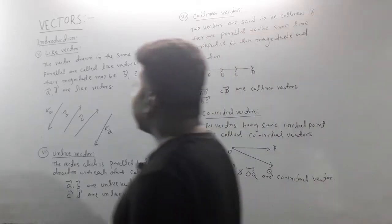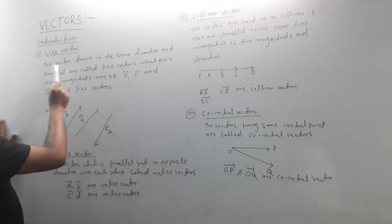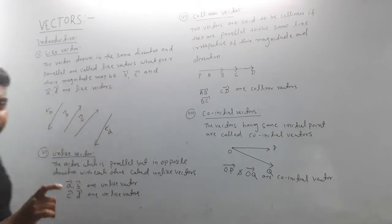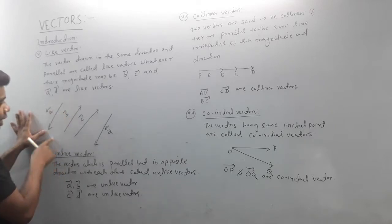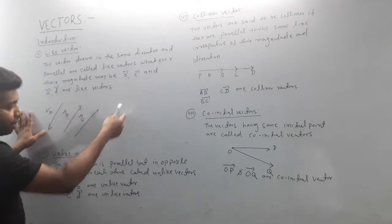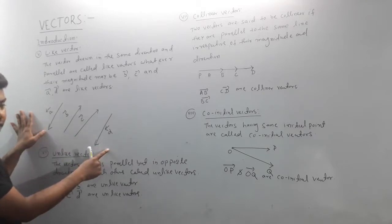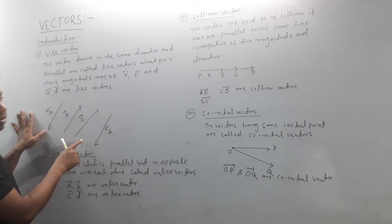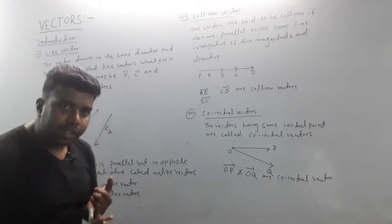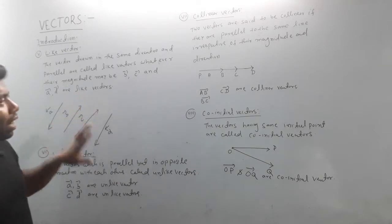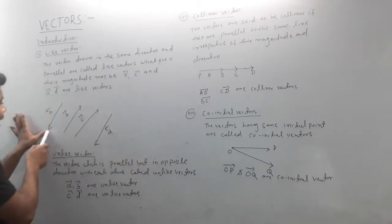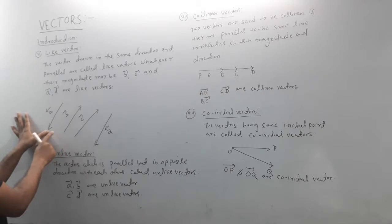Next type is the like vector. Vectors drawn in the same direction and parallel to each other are called like vectors. Unlike vectors, also called anti-parallel vectors, are parallel but opposite in direction. For example, if vector A and vector B are parallel but in opposite directions, they are unlike or anti-parallel vectors.